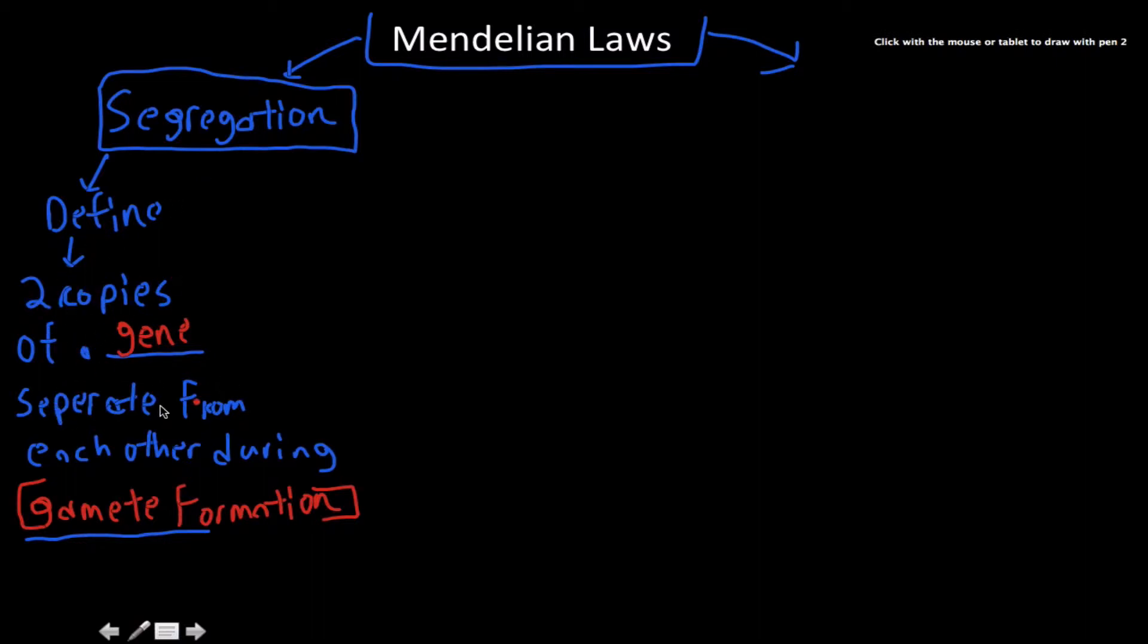The definition is that two copies of a gene separate from each other during gamete formation. Obviously, I'm paraphrasing this because Mendel didn't really know much about, well, he knew about gametes, but he didn't really know much about DNA.